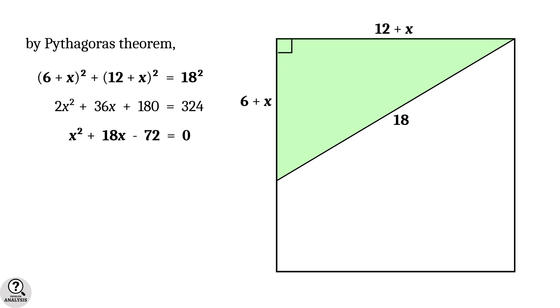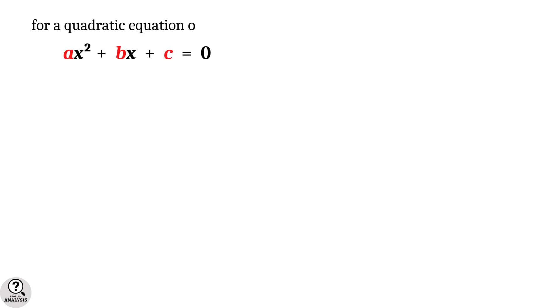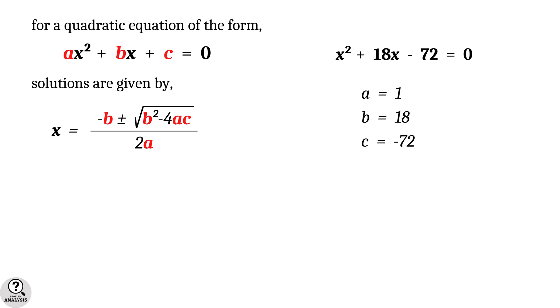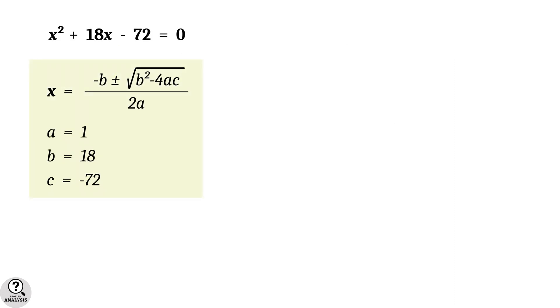Now solve this quadratic equation to obtain x. For a general quadratic ax² + bx + c = 0, the solutions are x = (-b ± √(b²-4ac))/(2a), the quadratic formula. Compare our equation: a = 1, b = 18, and c = -72.